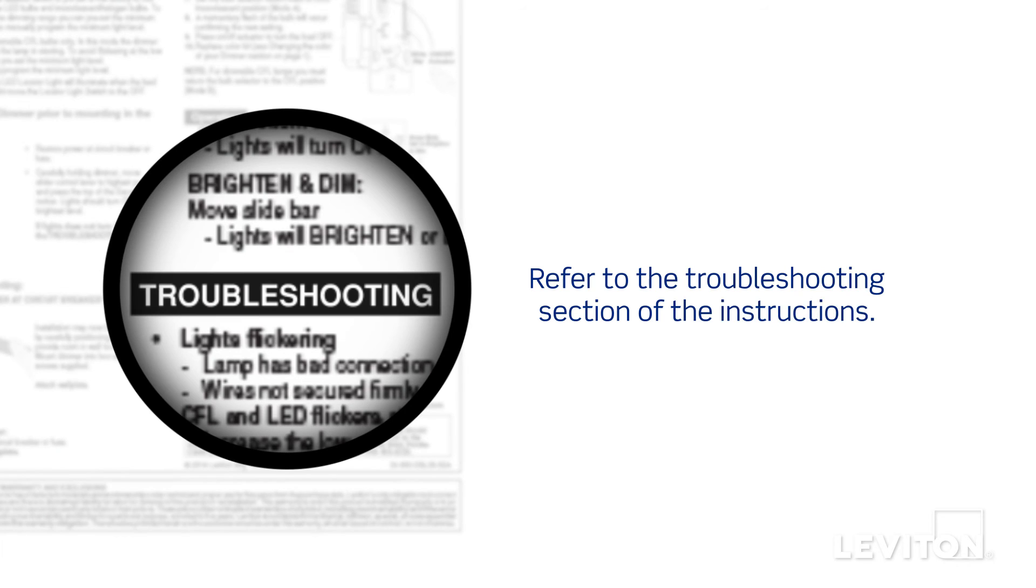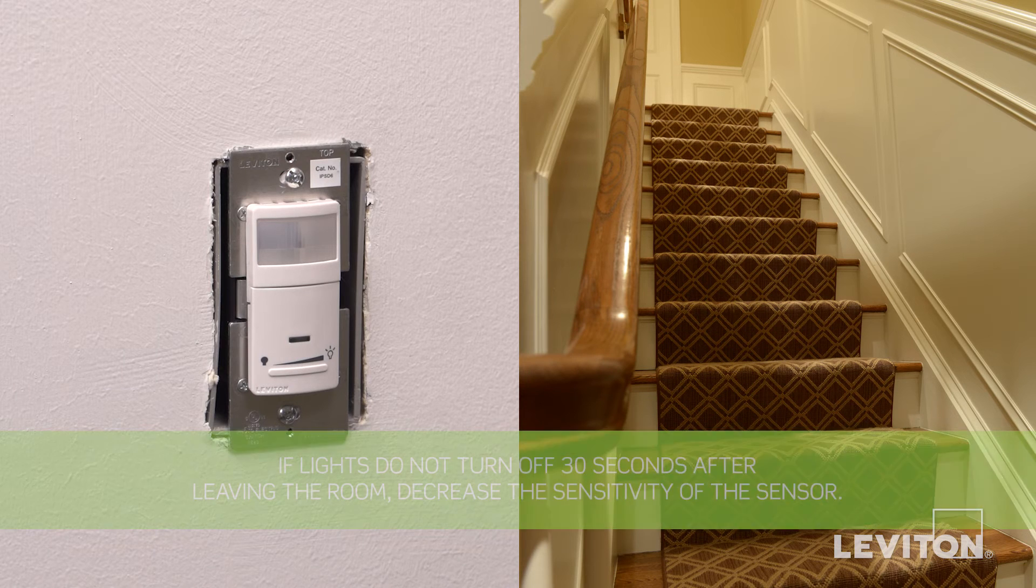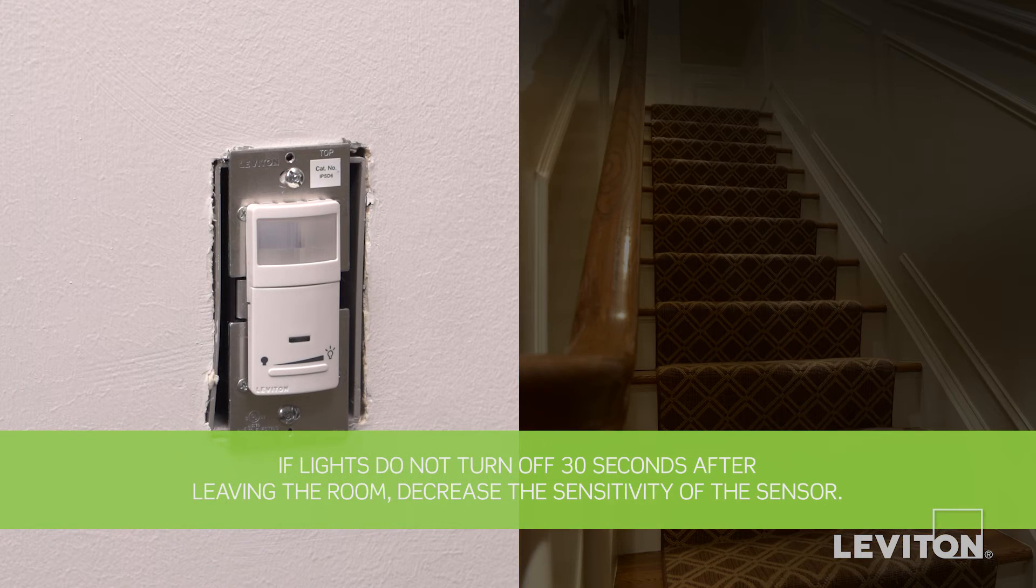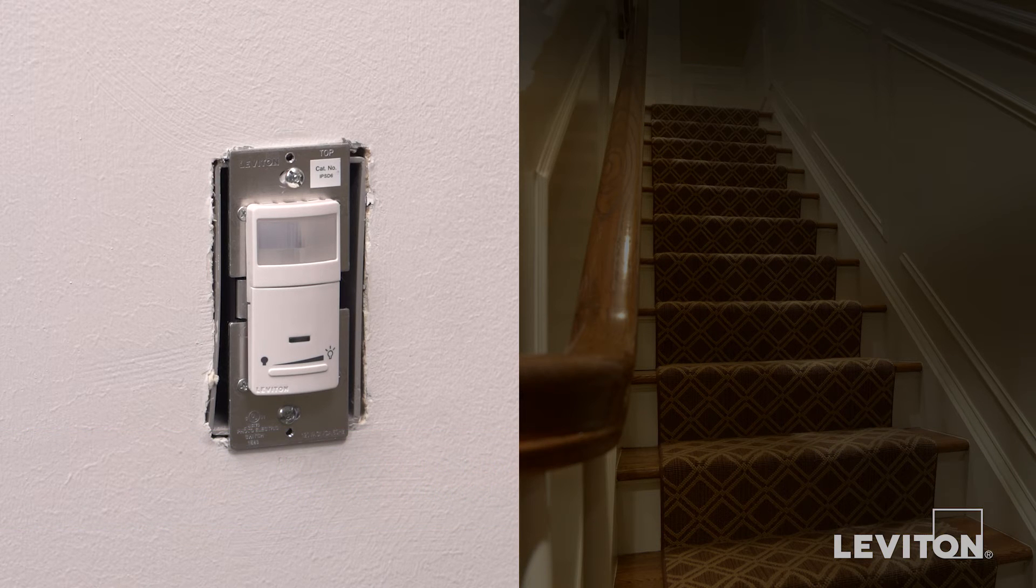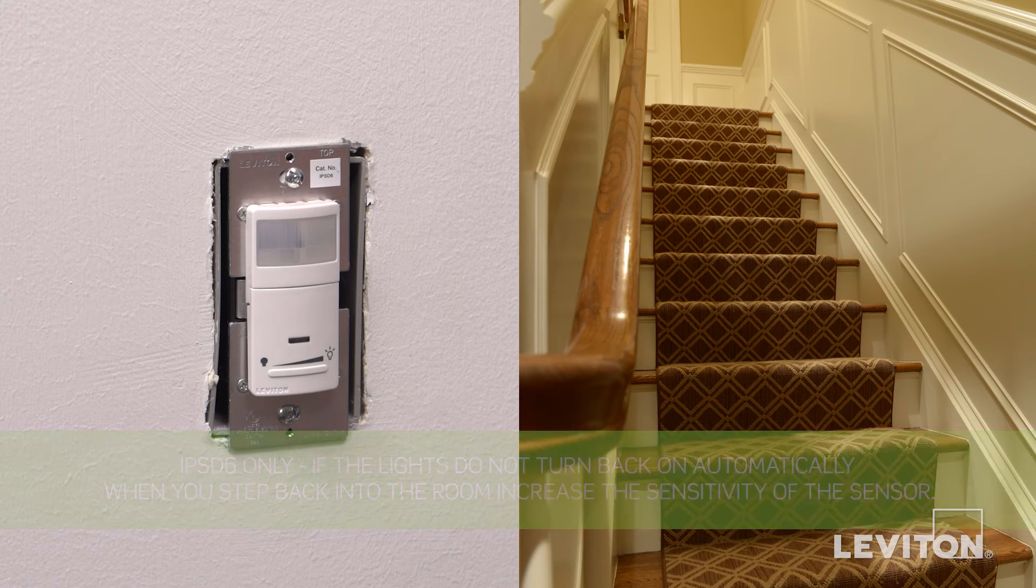Note, if lights do not turn on, refer to the troubleshooting section of the instruction sheet. Leave the room or field of view to allow the sensor to timeout and shut off the lights due to the absence of motion. Within 30 seconds of the lights timing out, step back into the room or field of view of the sensor and the lights should turn back on automatically.